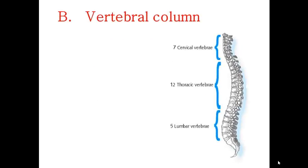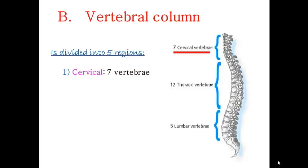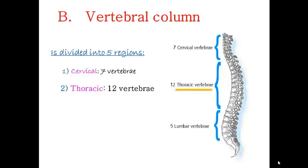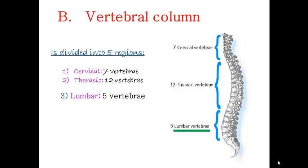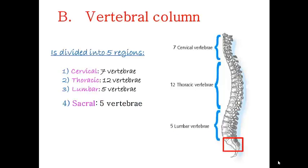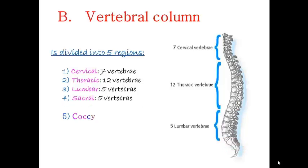The second part of the axial skeleton is the vertebral column. It forms the axial support of the body and is a flexible curved structure formed by 33 irregular bones known as vertebrae. Running through these bones is an empty tube known as the central canal, inside which runs the spinal cord. The vertebral column is divided into five regions: the cervical region with the first seven vertebrae, the thoracic region with twelve vertebrae, the lumbar region with five vertebrae, the sacral region with five vertebrae fused together to form a triangular bone known as the sacrum, and the coccygeal area with four vertebrae fused together to form the coccyx.